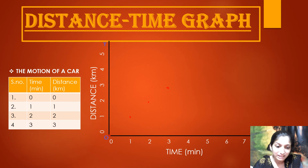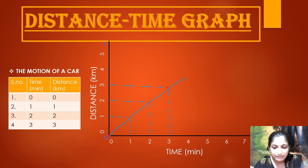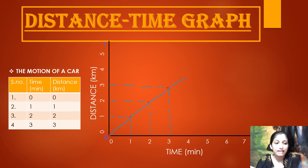Join all these points with a straight line using a ruler. When you do this correctly, you get a straight line graph. You can verify your plotted points by matching them with dotted lines from the axes to check whether the distance and time values are plotted correctly. This is how a distance-time line graph is made.